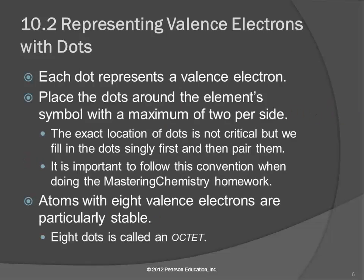In these Lewis structures, each dot represents a valence electron. We put those dots around the symbol with a maximum of two per side — top, bottom, left, and right — so you're going to have up to eight valence electrons. The exact location of them is not important, but it is pretty important that you put them in singly first and then pair them up, especially when you're doing the online homework, because Mastering Chemistry is very picky about certain things.